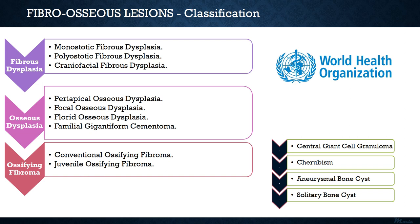Fibrous dysplasia is further sub-categorized into monostotic fibrous dysplasia, polyostotic fibrous dysplasia, and craniofacial fibrous dysplasia. Osseous dysplasia is sub-categorized into four types: periapical osseous dysplasia, focal osseous dysplasia, florid osseous dysplasia, and familial gigantiform cementoma. Ossifying fibroma can be broadly categorized into two clinical forms: conventional ossifying fibroma and juvenile ossifying fibroma.